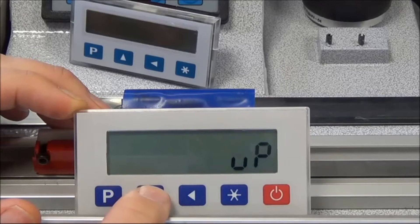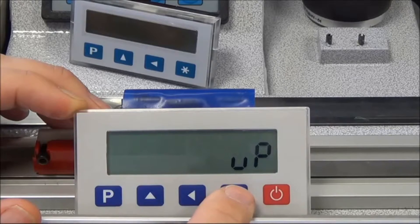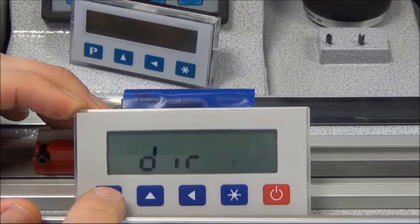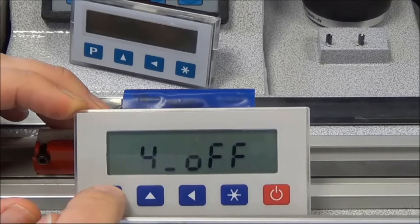Change it to UP for up and register the change by the star button and then come out of programming the datum.